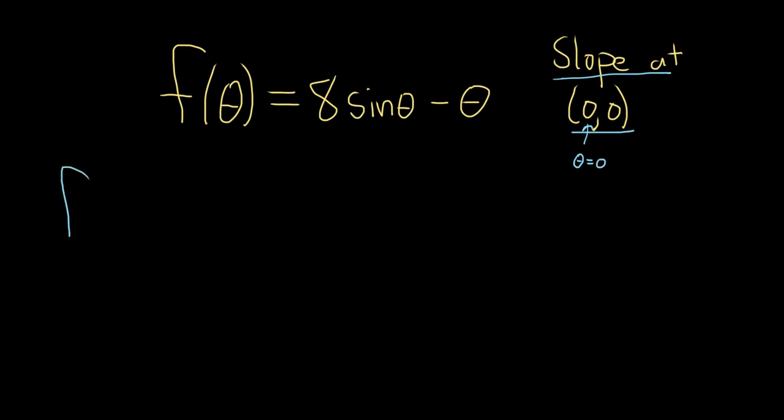Alright, let's do it. So f prime of theta is equal to... when you take the derivative of sine, you simply get cosine. So the 8 here just hangs out, so you get 8 cosine theta.